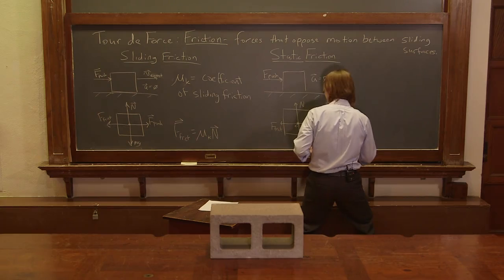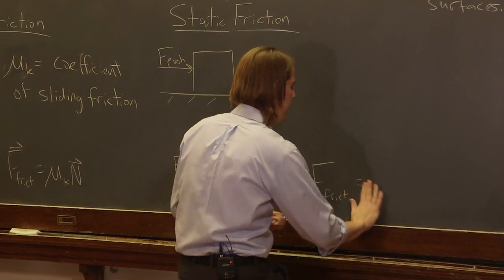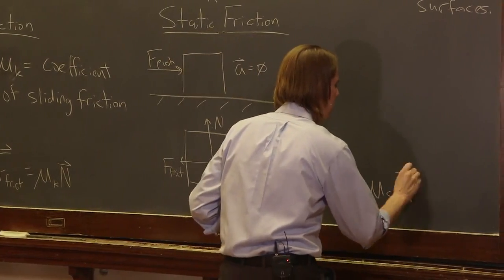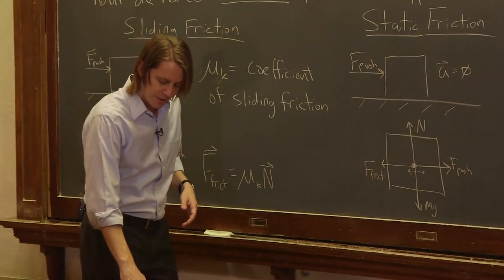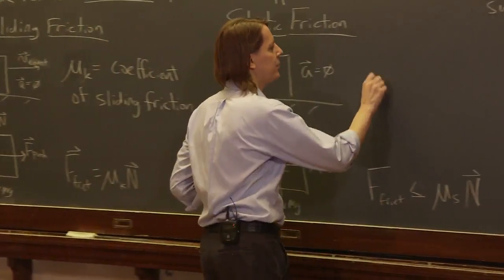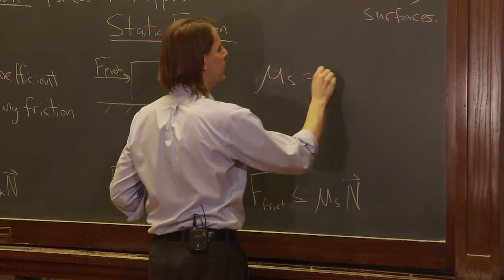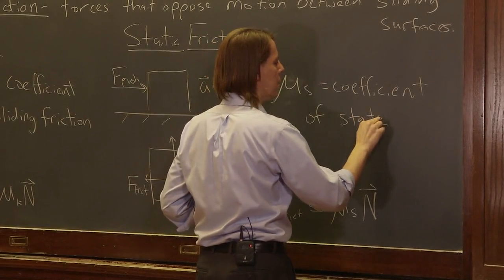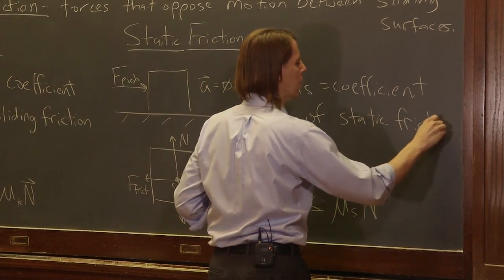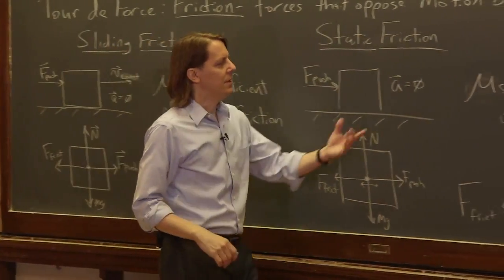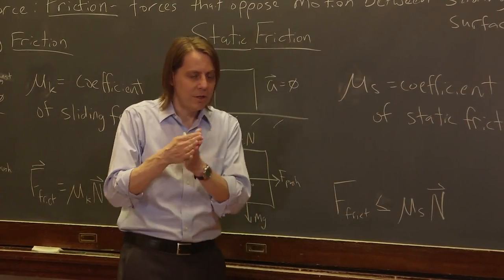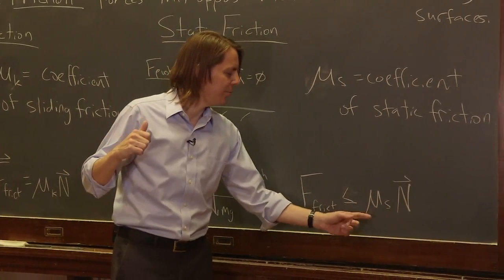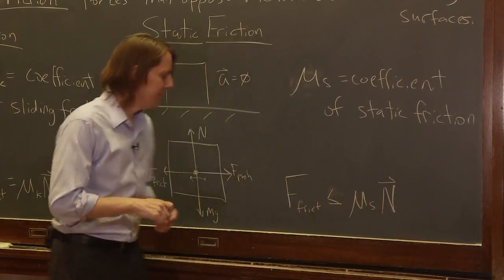The way you'd write it is: the magnitude of the friction force is less than or equal to μs times the normal force, where μs is the coefficient of static friction. Like the kinetic case, it is unitless. Like the kinetic case, it's really low when you have something slick like ice and really high when you have something like a cinder block on wood. It's simply a coefficient that modifies the normal force to get the friction force.